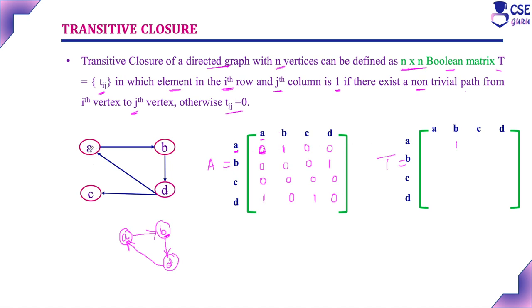For vertex A: A to B, there is a direct path — represent as 1. A to D, there is no direct path, but there is a path through B (A to B, then B to D), so represent A to D as 1. A to C, there is no direct path, but there is a path through A to B, B to D, and D to C — so represent A to C as 1. A to A: there is a path via A to B, B to D, and D to A — so represent as 1.